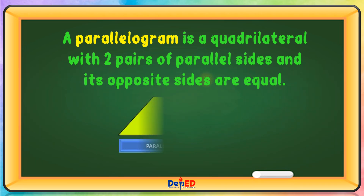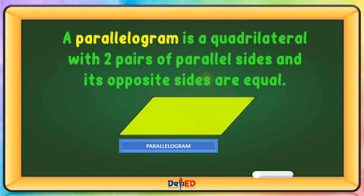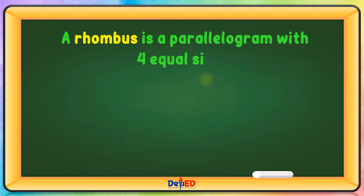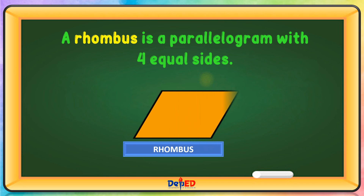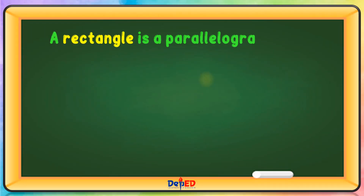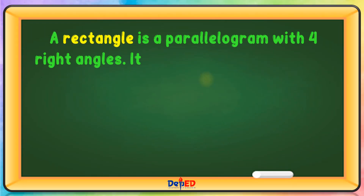A rhombus is a parallelogram with four equal sides. A rectangle is a parallelogram with four right angles.